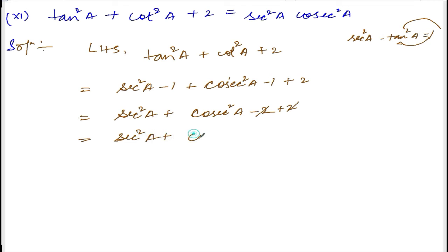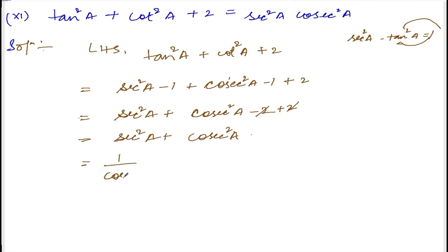So we get sec square a plus cosec square a. But the question asks for a product, not a sum. We need to convert this into multiplication. Write sec square a as 1 over cos square a, and cosec square a as 1 over sin square a.